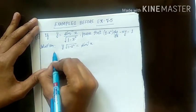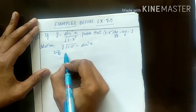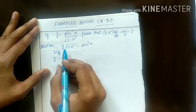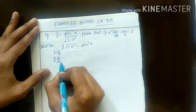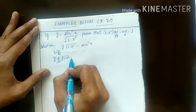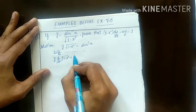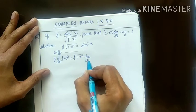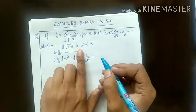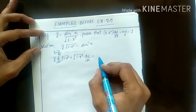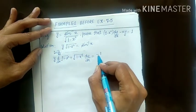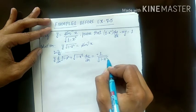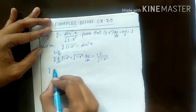Apply the product rule by differentiating both sides with respect to x. So y as it is, derivative of the second function under root 1 minus x square, plus under root of 1 minus x square as it is, derivative of y means dy by dx, is equals to derivative of sin inverse x, which is 1 upon under root 1 minus x square.